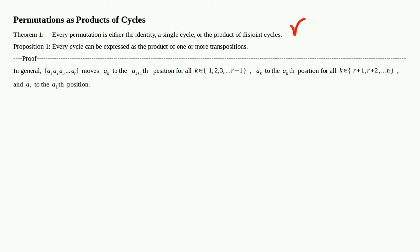It moves aₖ to the aₖ position for all k in {r+1, ..., n} — that is, if aₖ is not in the cycle, it leaves it alone. And it moves aᵣ to the a₁ position: it takes the last entry and moves it full circle back to a₁. So the cycle (a₁ ... aᵣ) has three behaviors, and what we're going to show is that that product of transpositions does exactly the same thing.